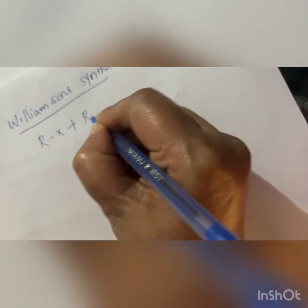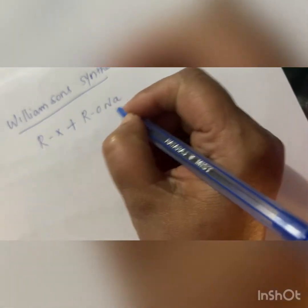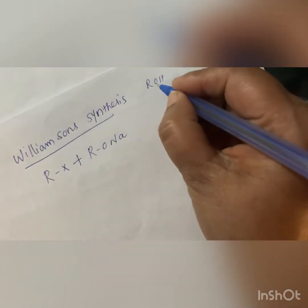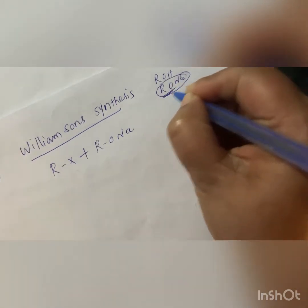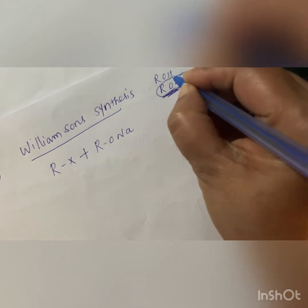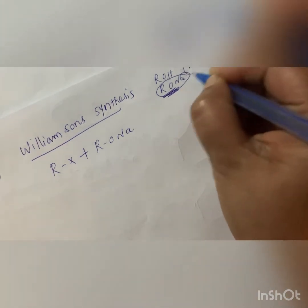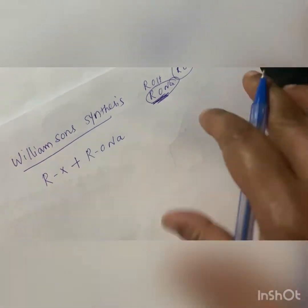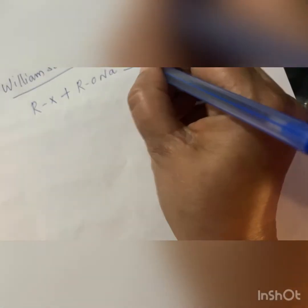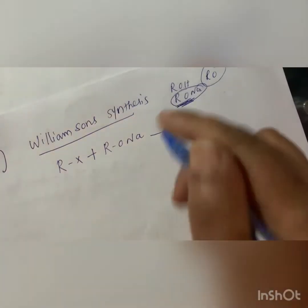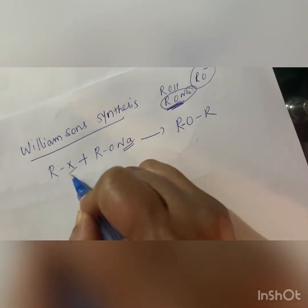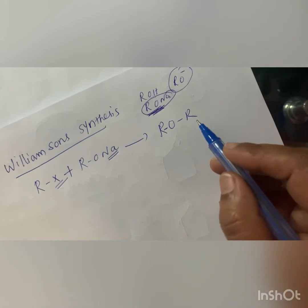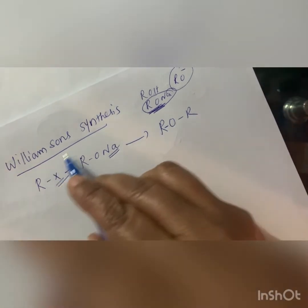The reaction is: RX (alkyl halide) plus RONa (sodium alkoxide). ROH is alcohol; when H is replaced by Na, we get the sodium salt of alcohol, RONa — sodium alkoxide. RO⁻ is the alkoxide ion. NaX is removed from the reaction, and you get ROR, which is ether. This is Williamson's synthesis.